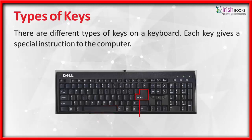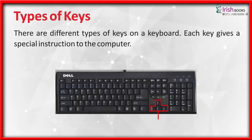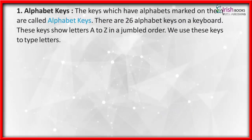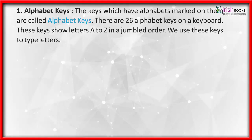Keys with alphabets marked on them are called Alphabet Keys. There are 26 alphabet keys on a keyboard. These keys show letters A to Z in a jumbled order. We use these keys to type letters.